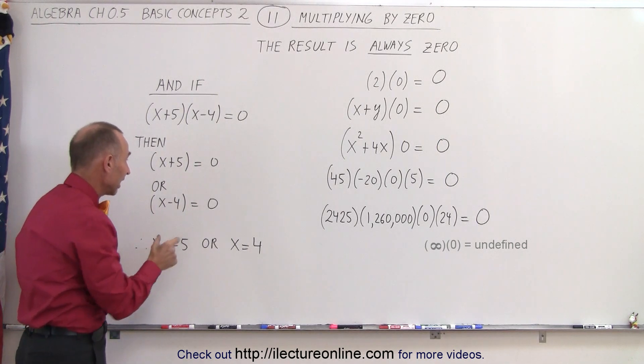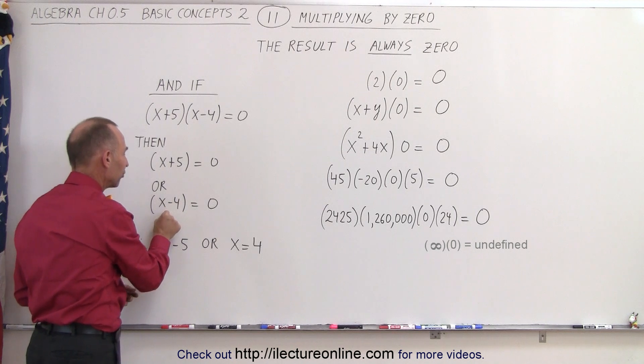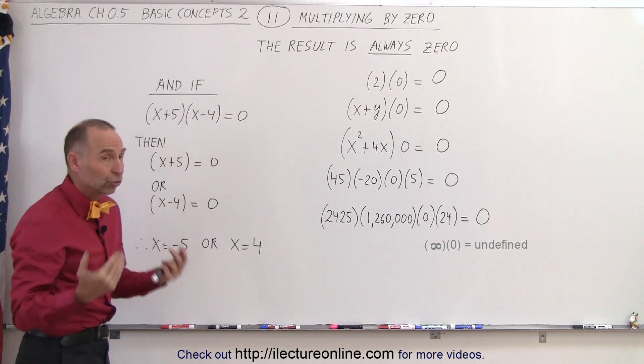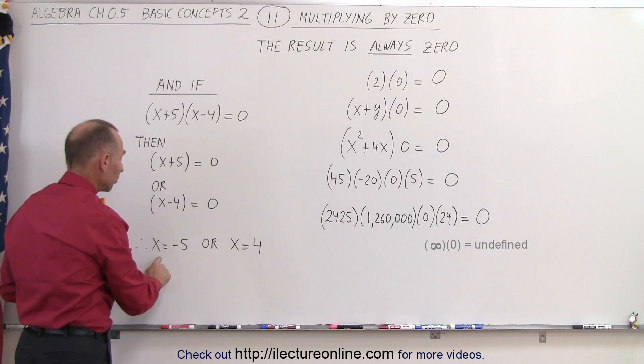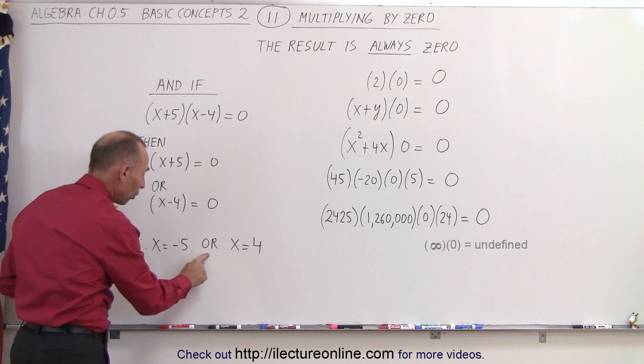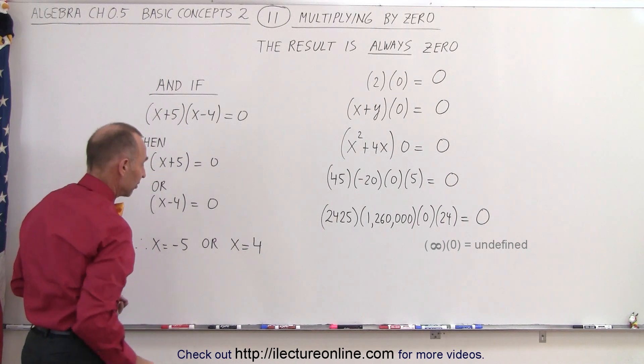So therefore, it's either that x plus 5 is equal to zero, or x minus 4 is equal to zero. If that's true, we can then conclude, when we bring the 5 to the other side, that x must either equal a negative 5, or x must equal a positive 4.